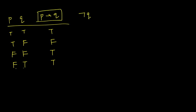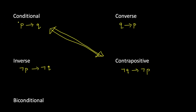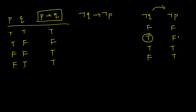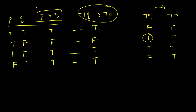Now let's write not Q implies not P — the contrapositive. We negate the P and Q columns. Evaluating not Q implies not P for all four rows gives: true, false, true, true — which exactly matches the truth table for P implies Q. So the contrapositive statement is the same as the original conditional statement.